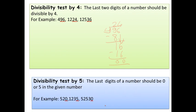Now, let us see the divisibility test by 5. The last digit of a number should be 0 or 5 in the given number. For example, 520. Here, the last digit is 0. So, it is divisible by 5. Next example is 1235. Here, the last digit is 5. So, it is also divisible by 5. The next example is 52530. The last digit is 0. So, the number is also divisible by 5.